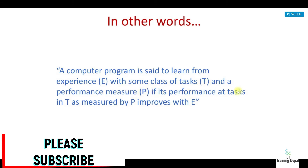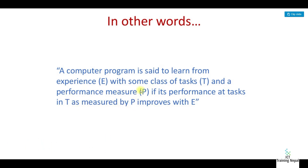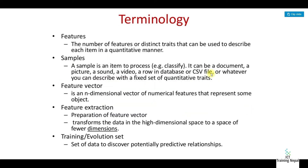If its performance on tasks T, measured by P, improves with experience E — that is the formal definition. Normally the class of tasks is measured by the performance of the task.